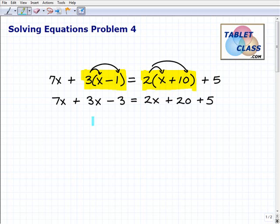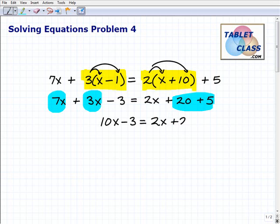And now I'm going to look for opportunities to combine like terms. So here and here I have like terms. On the right-hand side of the equation, I could just add these two numbers there. So if you're following along, maybe you want to pause the video and try it with me. So I'm going to get 10x minus 3 equals 2x plus 25.